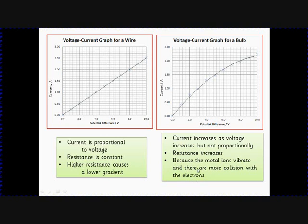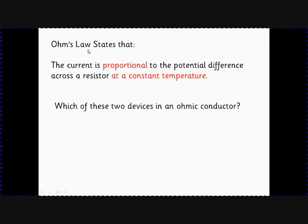Okay, Ohm's law states that current is proportional to the potential difference. So the only one of those two devices which is ohmic is the fixed resistor, the wire, because in that device the current is proportional.